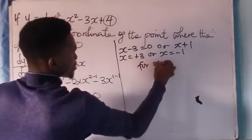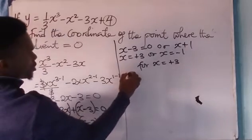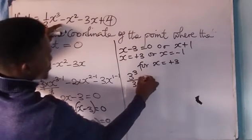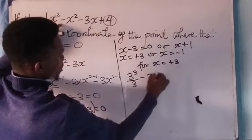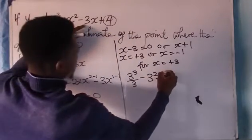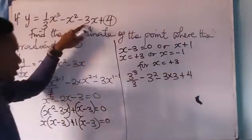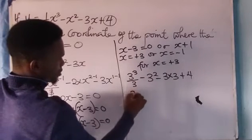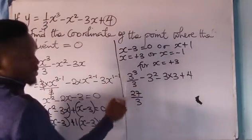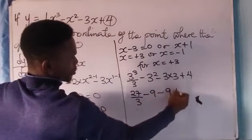Then for x equals plus 3, wherever I see x, I'll put 3. Now this becomes 3 raised to the power 3, x raised to the power 3 over 3, then minus 3 raised to the power 2, then minus 3 times 3, then plus 4. I'm going to have, then this is 27, 27 over 3, because 3 raised to the power 3 is 3 times 3 times 3. Then minus 9, minus 9, then plus 4.